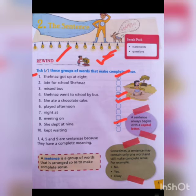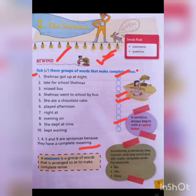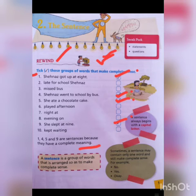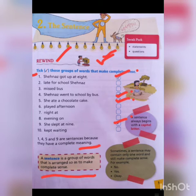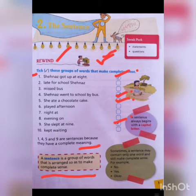So, sentences number one, four, five, and nine are sentences because they have a complete meaning. A sentence is a group of words that is arranged so as to make complete sense. The group of words that has a complete sense and complete meaning is what we call a sentence.